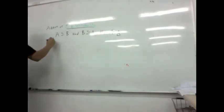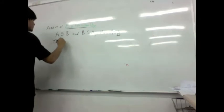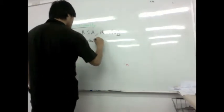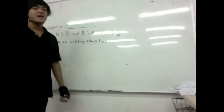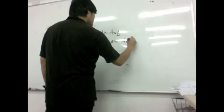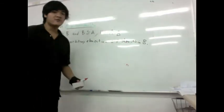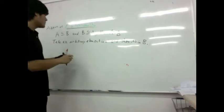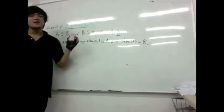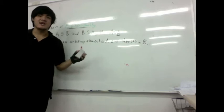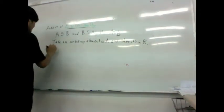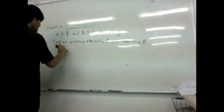Very simple. You take an arbitrary element of A and show it is in B. So if I take an arbitrary element of A — because it was generalized, I just pick any element in A — I take a fixed element of A, and then I prove it is in B. This implies A is a subset of B.